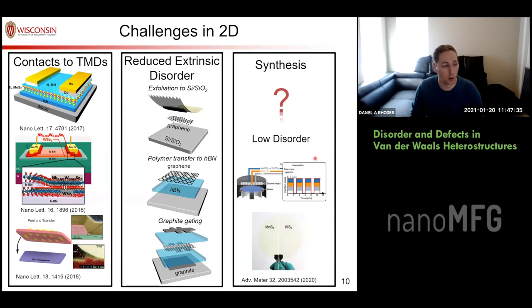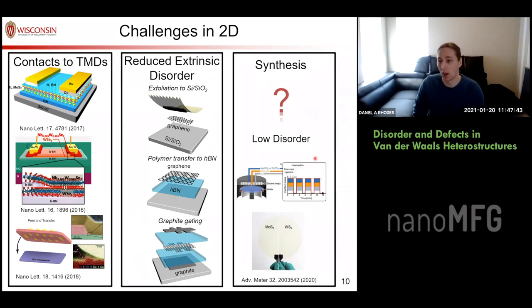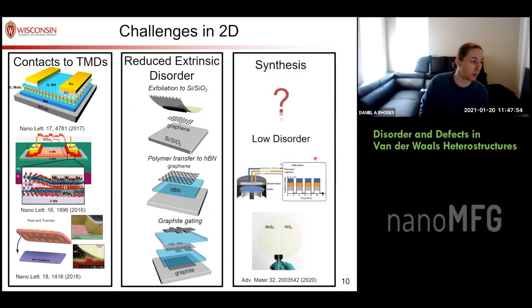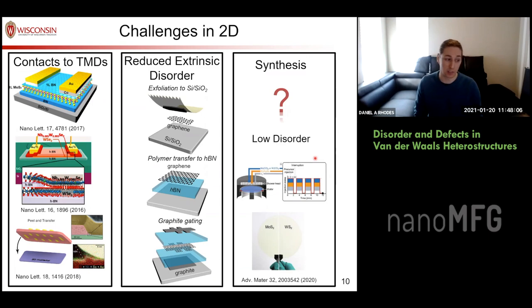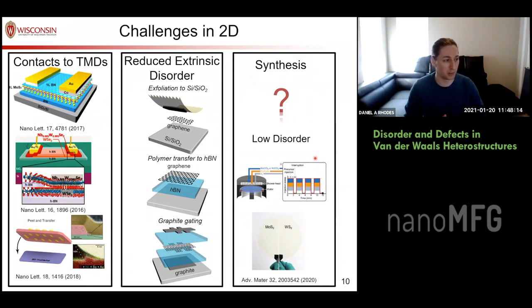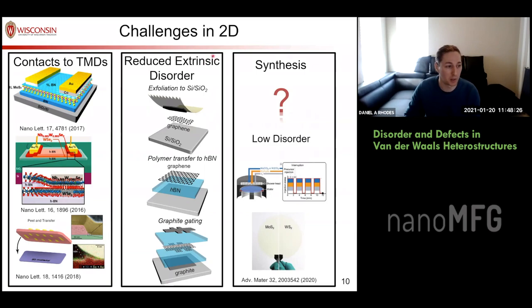With all that prefacing the talk, some additional challenges are contacts to TMDs, where progress has increased substantially in the last four years. Still, even getting the most perfect device to work is maybe one in five for the simplest designs of nanodevices from exfoliated material of the highest quality. The only way of reducing extrinsic disorder pushed so far by our community is stacking in hBN, but there are a lot of other materials we need to work with — which remains a challenge in 2D.